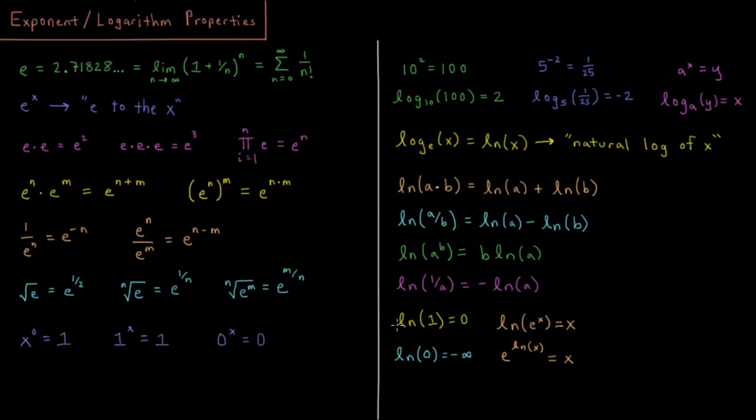So then to look through our final few properties, the log of 1, that's going to be equal to 0, because it's kind of the inverse of this property here. Any number to the 0 equals 1, so any logarithm of 1 is equal to 0.